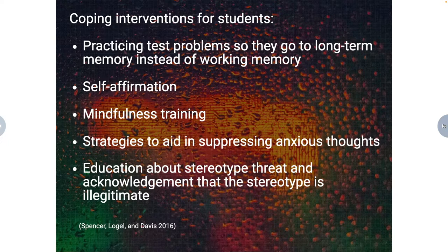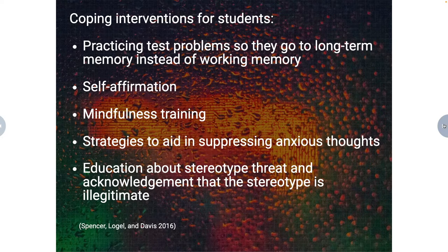One recommendation is to educate students about stereotype threat and acknowledge that the stereotype is not legitimate. However, there's a concern related to priming — several studies have shown that students underperform after priming the stereotype. For example, by asking students to identify their ethnicity or gender, that primes them to think about their ethnicity or gender, which can then impact them on a test when they're under stereotype threat. So acknowledging the stereotype's illegitimacy is important, but timing is crucial — you probably wouldn't want to do that right before giving a high-stakes test or exam.